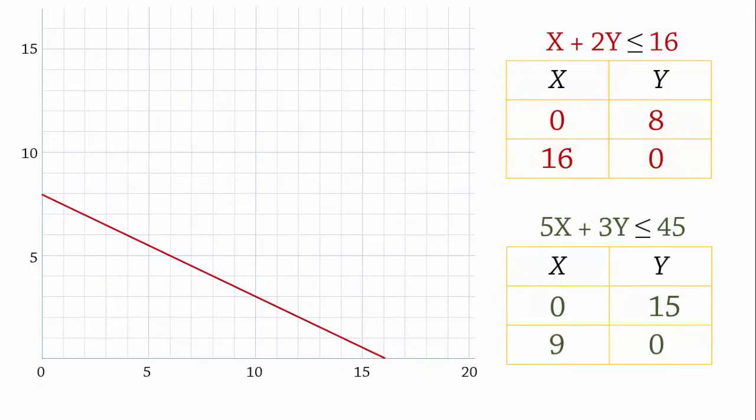We do the same for constraint 2, 0, 15 and 9, 0. And then draw the constraint line.